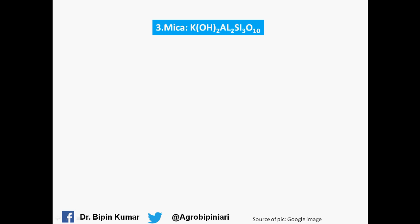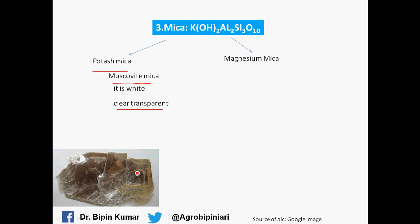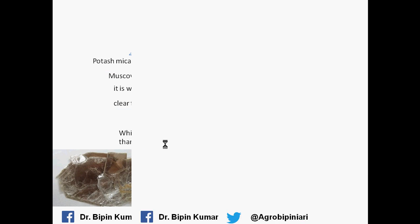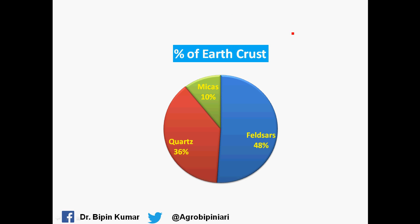The third most important mineral is mica. Mica also contains potash, aluminum, and silicon in its composition. There are two types: potash mica and magnesium mica. Potash mica is called muscovite mica — it is white in color and clear and transparent in its pictorial form. Magnesium mica is called biotite mica — it resembles muscovite but is black in color. White mica is more resistant to weathering than black mica.